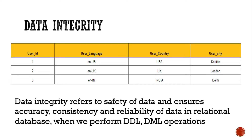Obviously this would negatively affect our databases. This is where data integrity comes in. Data integrity refers to the safety of data and ensures the accuracy, consistency, and reliability of data in a relational database. When we perform any operation like DDL or DML operations, data integrity is very important.